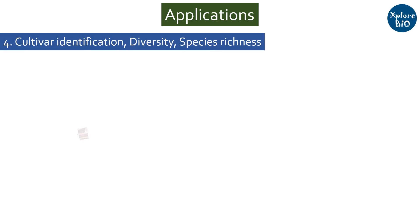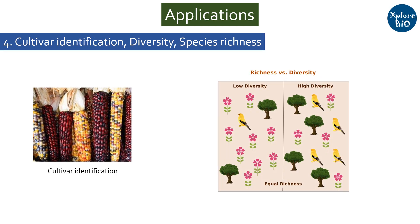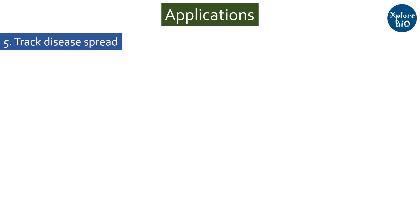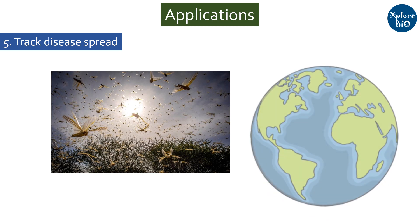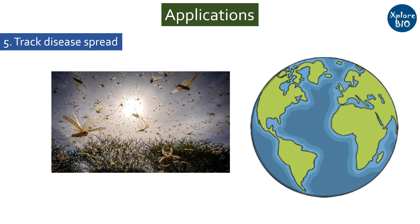DNA Fingerprinting is useful to identify a particular variety or cultivar, estimate the level of biodiversity and species richness, which is essential for conservation efforts of rare and endangered species. The technique can also be used to identify and track the spread of plant pathogens or pests by analyzing their DNA, helping to determine the origin of a disease outbreak and devise strategies for controlling and eradicating the disease.